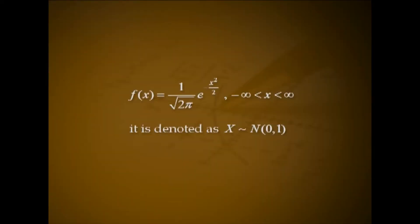A normal distribution with mean μ equal to 0 and standard deviation σ equal to 1 is called a standard normal distribution. When x follows standard normal distribution, f(x) equals 1 by root(2π) into e raised to minus x squared divided by 2, for minus infinity less than x less than infinity.